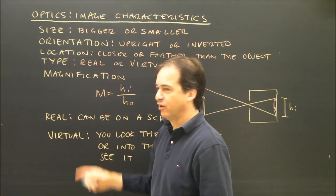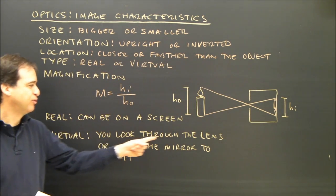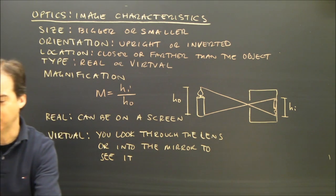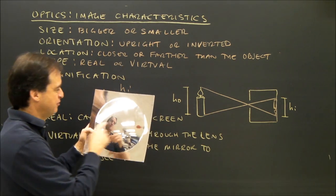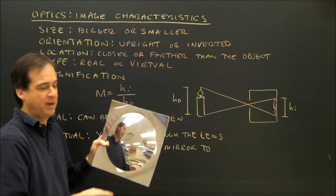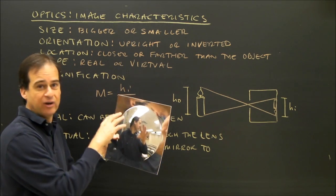Virtual images are a little more difficult to describe. A virtual image, you look through the lens or into the mirror to see it. So if I'm talking about a mirror, this mirror here creates an image of me, but I can't project that onto any paper. I look at the mirror to see it. And I can see I'm a little bit smaller, and I'm upright.